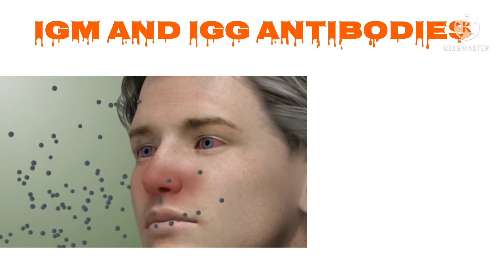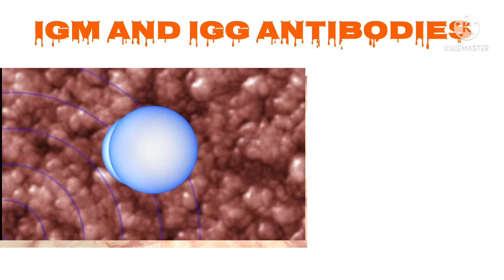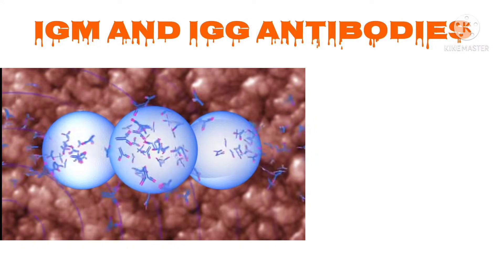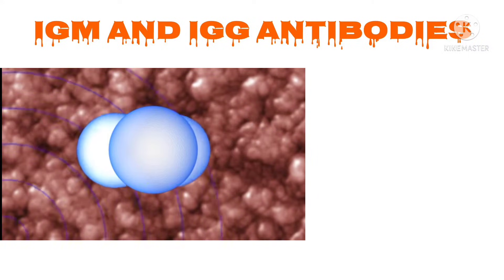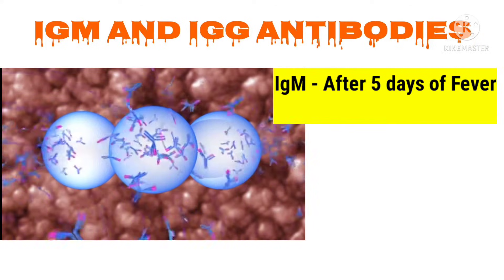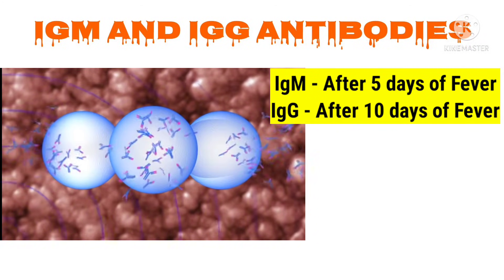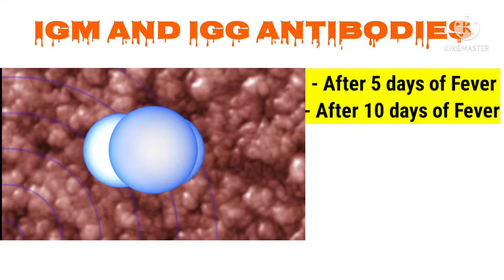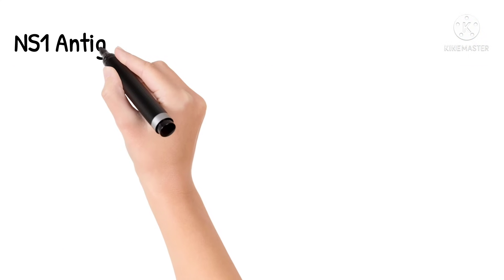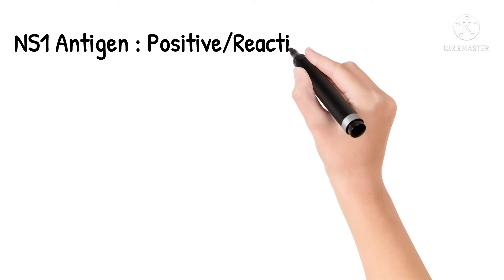Whenever an antigen enters the human body, our immune system produces antibodies against it. These antibodies are IgM and IgG. IgM antibodies are formed within five days of onset of fever, whereas IgG antibodies are formed after ten days of onset of fever. If NS1 antigen is present or reactive, we call that dengue.